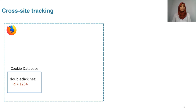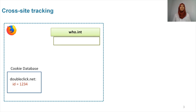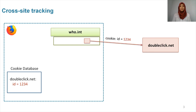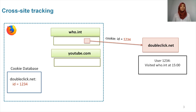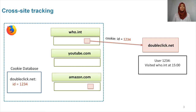We present the user's browser in a blue box. Inside the browser, we have the cookie database, and in that example, we suppose we have DoubleClick.NET's cookie in the browser. Let's take this navigation example. Let's say the user first went to the World Health Organization website, which has content from DoubleClick.NET. We present DoubleClick.NET's server on the right in a red box. In order to fetch the content, a request will be sent to DoubleClick, and the browser will automatically attach its cookies. Using this request, DoubleClick will get to know that user 1234 visited the World Health Organization. Let's say that later on, the user went to YouTube.com and then to Amazon.com, which also have content from the same third party.